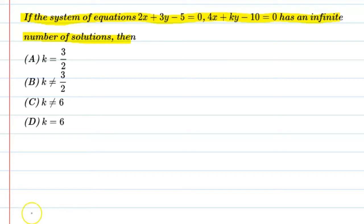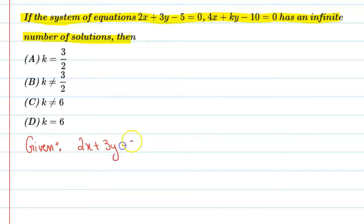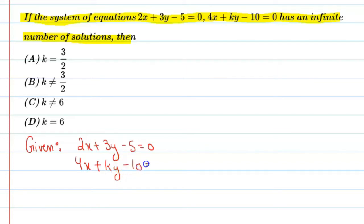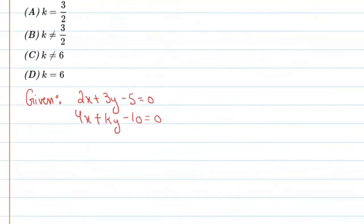First, let's note down what is given. Equation number one is 2x + 3y - 5 = 0, and the second equation is 4x + ky - 10 = 0. As you know, when we are given two equations, we can write them in standard form.